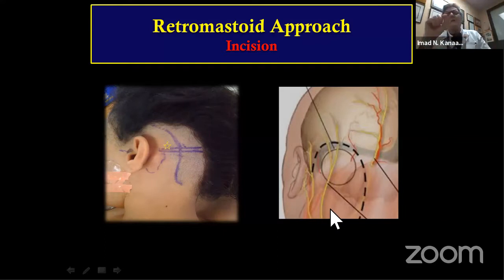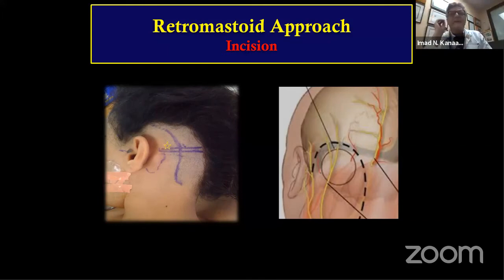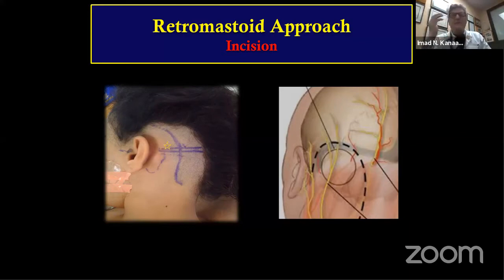Pay attention to the occipital minor nerve: if you see it, don't cut it — dissect it and move it, because some patients complain of pain and headache from it postoperatively. Try to mobilize it rather than using monopolar to cut everything. Be more anatomical in your dissection.